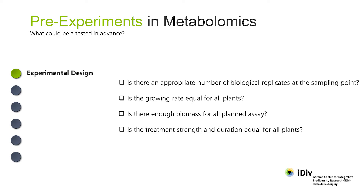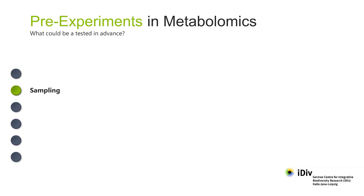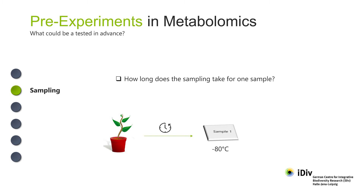Test the treatment method in advance. Will the treatment have the same strength for all plants and take place at the same time and same position? Remember that the metabolome can change dramatically within minutes or even seconds in response to an external stimulus. Time your sampling procedure. In metabolomics research, you'll need to treat and sample dozens or even hundreds of plants. It's important to know how long these steps take for each plant so as to make sure treatment and sampling occur as simultaneously as possible. If there's a long delay, conditions will differ between the plants handled early and those handled late, and this will increase variability.